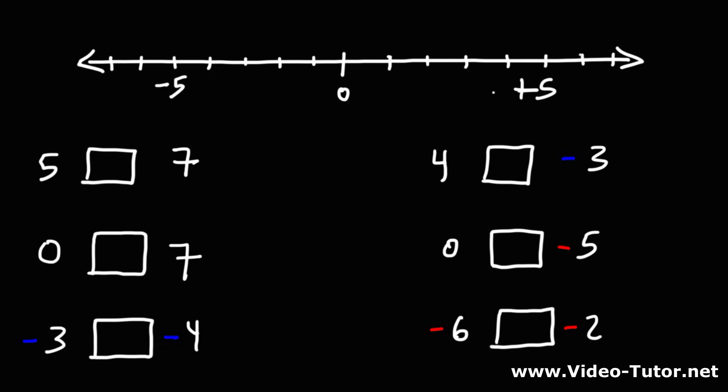On the right side of the number line, we have the positive values. To the left of 0, we have the negative values. As you travel to the right, the value of the number increases. So positive numbers have a higher value than negative numbers.